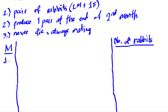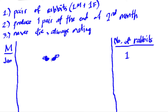Month one — January. There's going to be one pair of rabbits. They're still babies, so they cannot mate. They will get to know each other, and after that they will mate and produce another pair. But this is still the stage where they get to know each other — so there's only one pair. They will produce one pair at the end of the second month, so during February there is still one pair of rabbits.